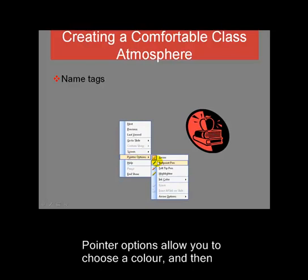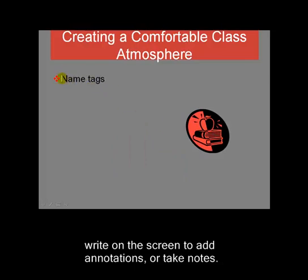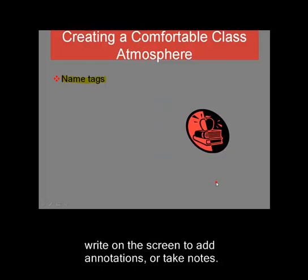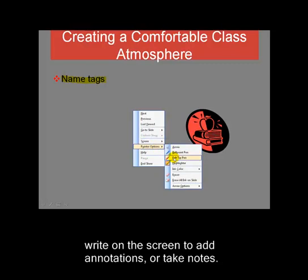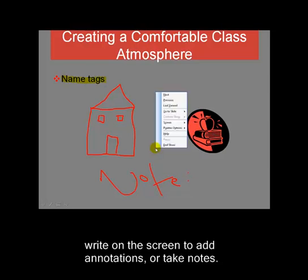Pointer Options allows you to choose an ink colour and then use one of the pen options to write or draw on the screen. For example, if you want to highlight one of the bullet points, you can select the highlighter tool and highlight. You can choose a different colour and choose a pen to draw on the screen — perhaps if you're having a planning meeting and want to take some notes. It's not very easy to write with a mouse, but you can do that. So that was Pointer Options.